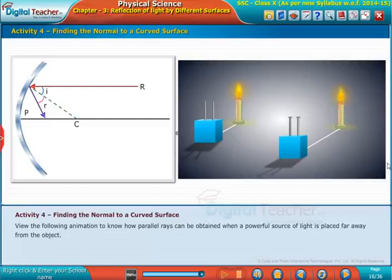Parallel rays can be obtained when a powerful source of light is placed far away from the object.